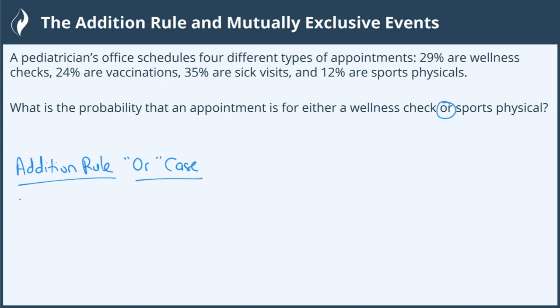In the last video I wrote down this general rule: the probability of A or B is equal to the probability of A plus the probability of B minus the probability of A and B — the intersection of the two, both of them happening at the same time.